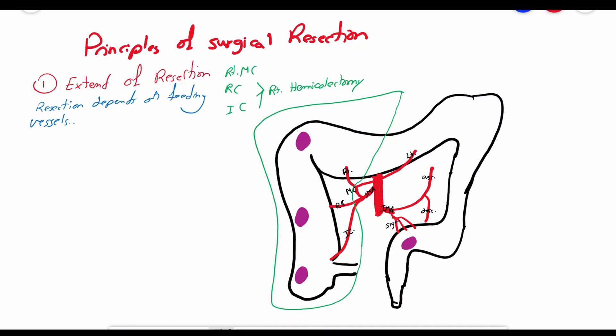For sigmoid tumors, a resection of sigmoid colon along with the sigmoidal branches of the inferior mesenteric artery is performed.